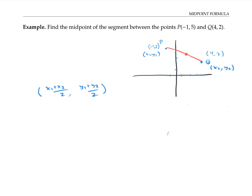Let's see. I take the average of my x-coordinates, so that's negative one plus four over two, and the average of my y-coordinates, so that's five plus two over two.